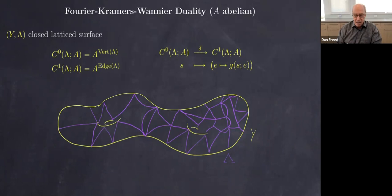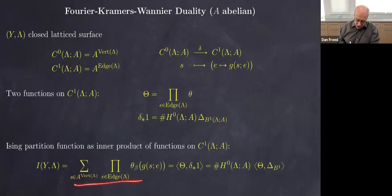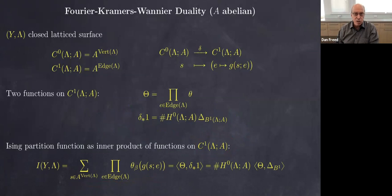The one co-chains are functions from the edges to A, and the co-boundary operator takes a configuration to each edge's ratio or difference in the abelian group of the values at the boundaries. We can write the partition function as an inner product of two functions on the one co-chains — that finite set has a natural L^2 inner product. One function applies the weighting function theta multiplied over all edges; the other is the push-forward of the constant function one, telling you you're summing differences of edges.